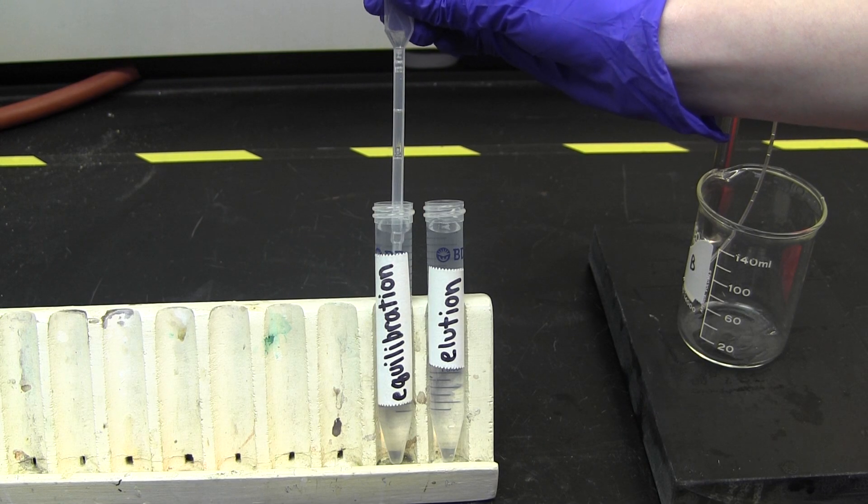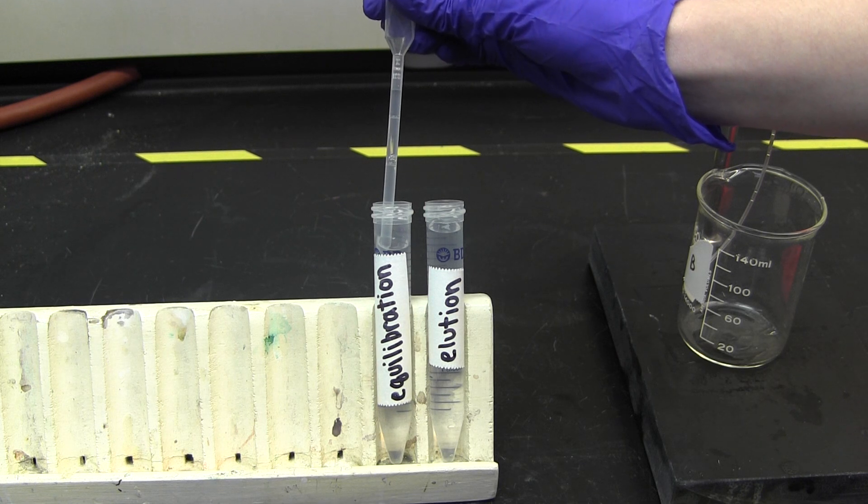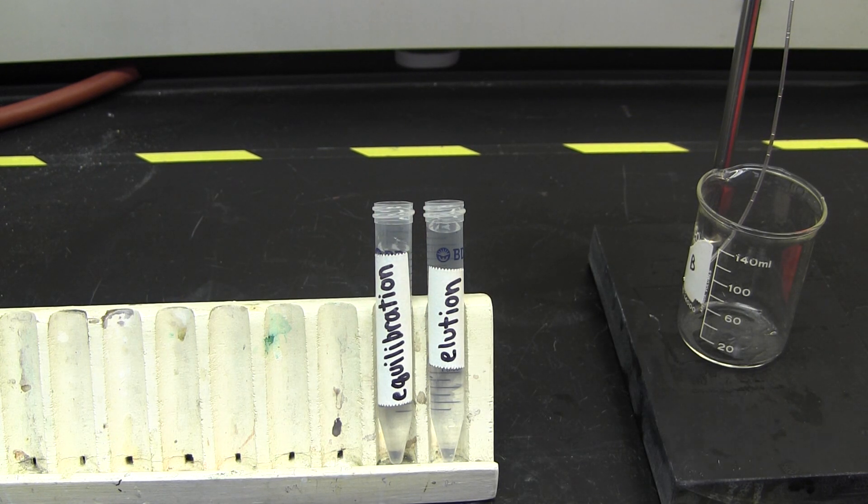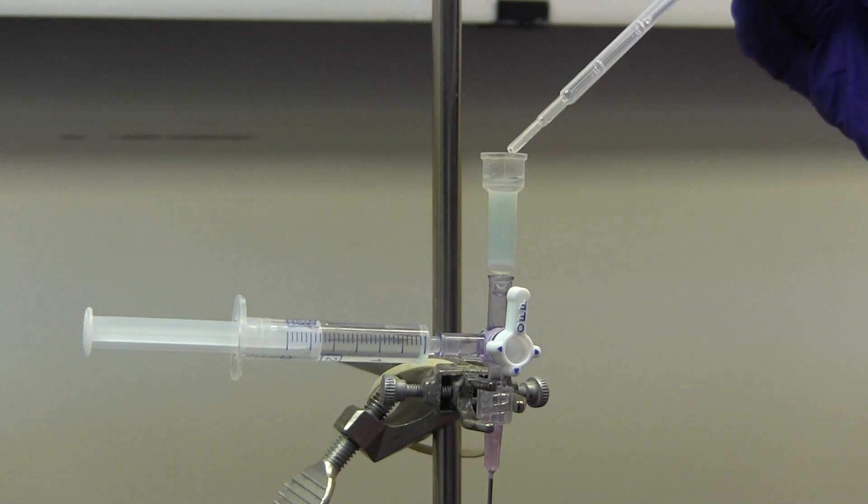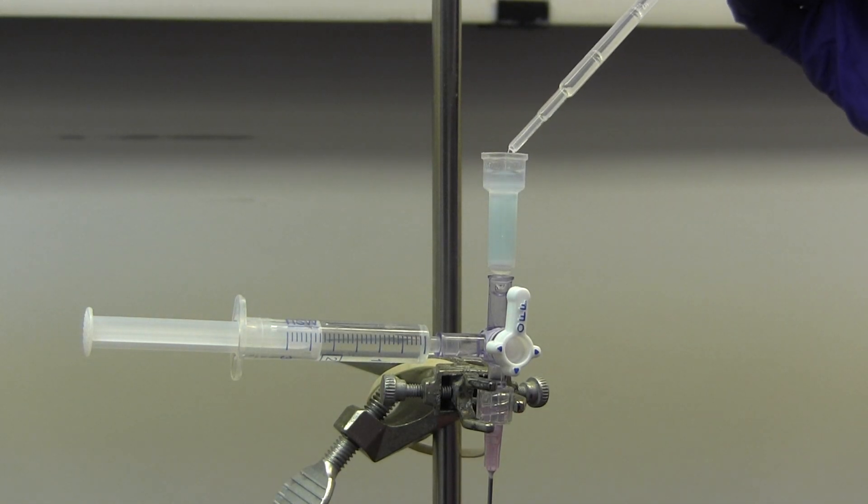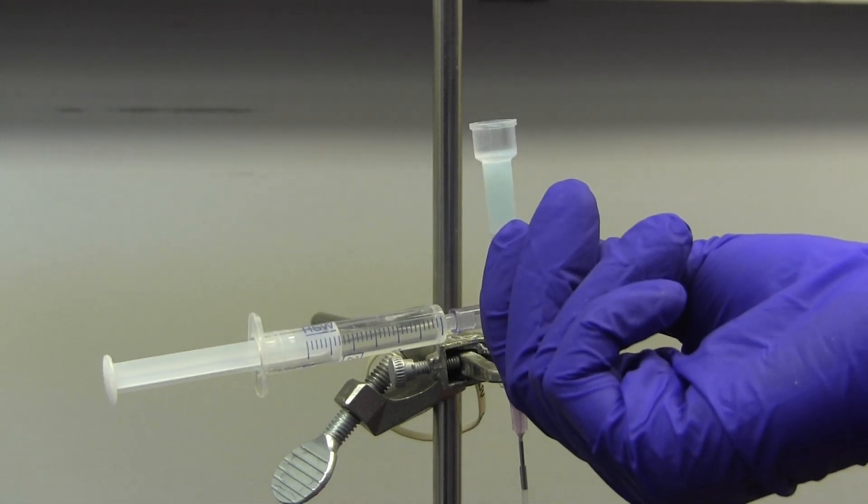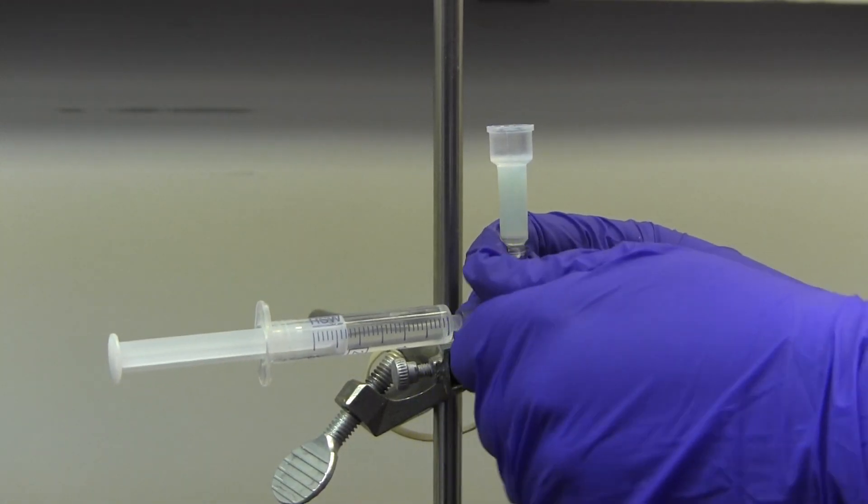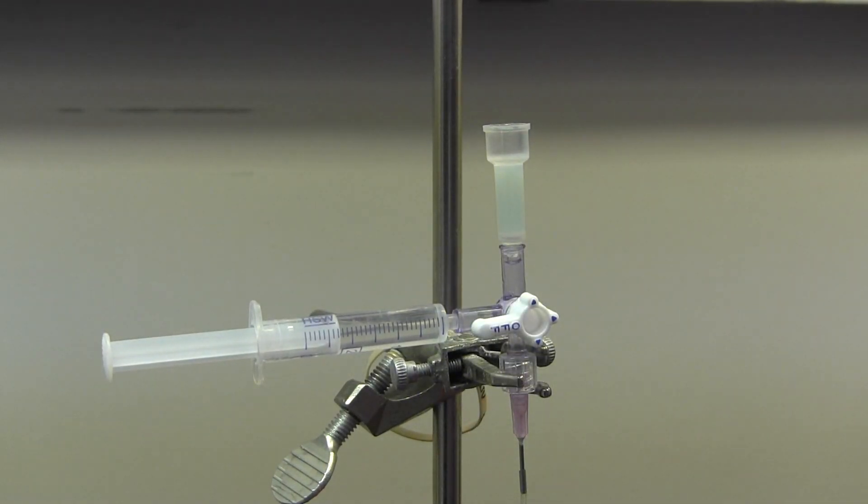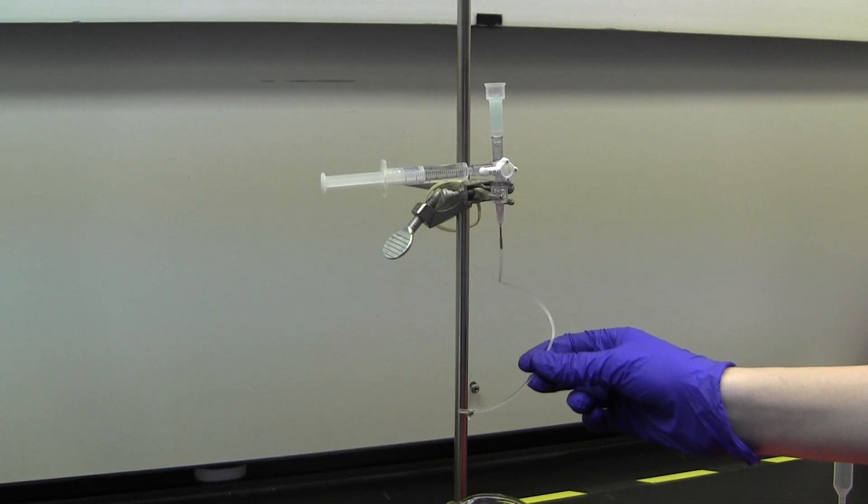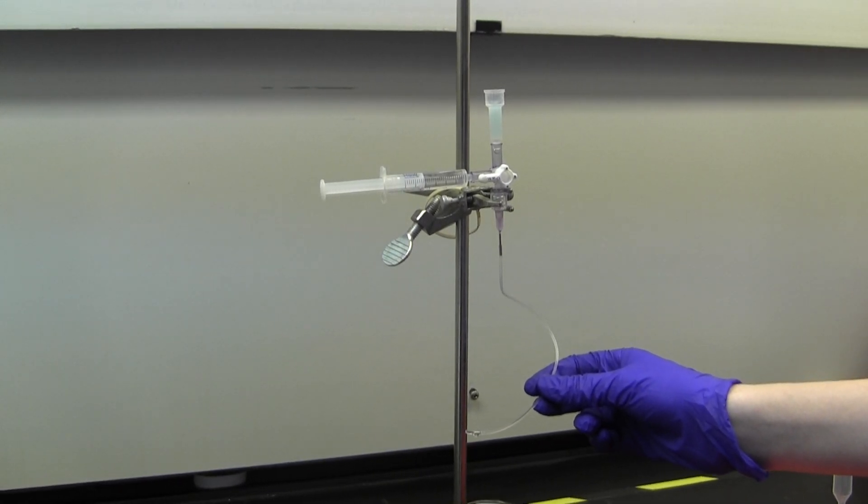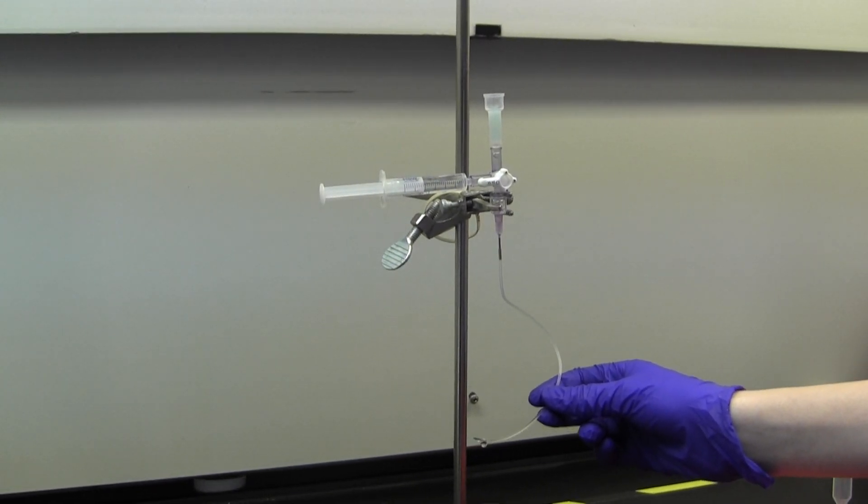First, wash the column with 5 column volumes of their equilibration buffer. Do this 1 milliliter at a time and do not let the resin run dry. While this is washing, adjust the displacement of your column by moving it up or down the ring stand or change the position of the tube. The column should be dripping at a rate of about 1 milliliter per every 2 minutes. It is crucial that you do not rush while collecting fractions.